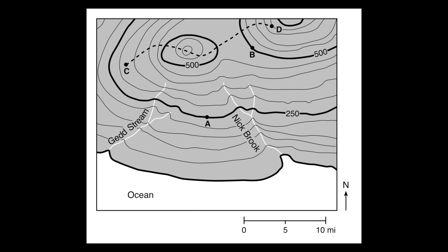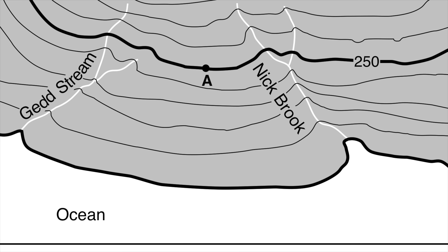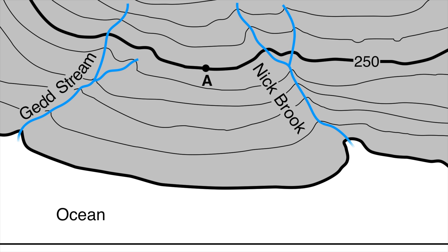Let's get started with a sample map. Here I have a pretty simple topographic map. I can see a map scale down at the bottom, a compass rose, some different contour lines with index contours and some points. What I want to focus on are these two white lines here which represent streams — I have Ged stream here and Nick Brook over here — and my job is to determine the direction that those streams are flowing.